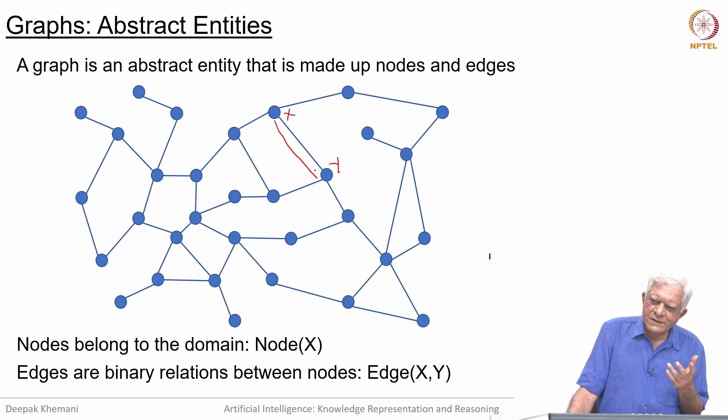Very often when we talk about graph algorithms, we give names to edges as well. We can say that E is an edge. For every edge in the graph do something. We are creating an abstract entity called an edge which we think of as existing in the domain.